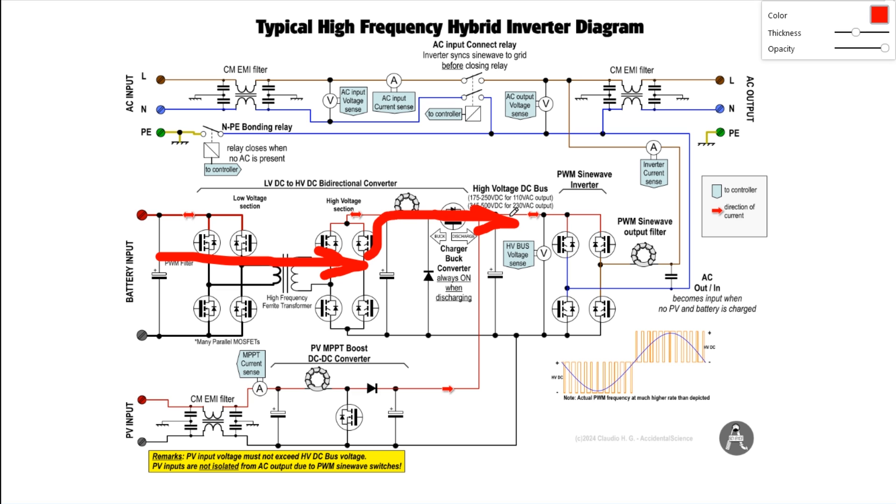And here a couple of important considerations. Because here we have only a boost converter, the input from the photovoltaic string must never exceed the maximum voltage of the DC high voltage DC bus here. And another important point is that the input of the photovoltaic is not isolated in respect to the high voltage bus and this has important implications as we will see soon.